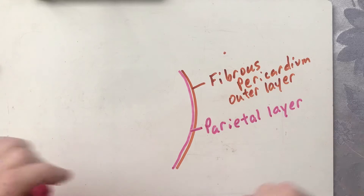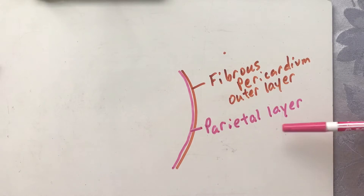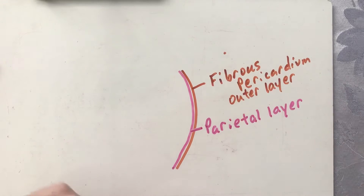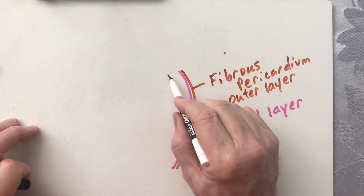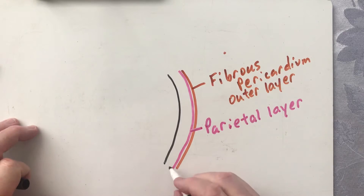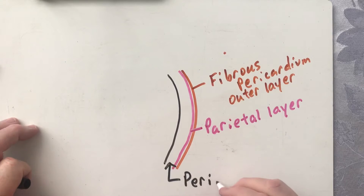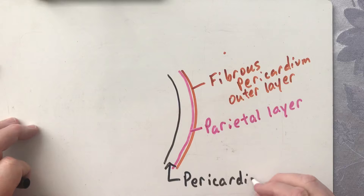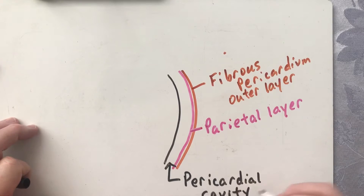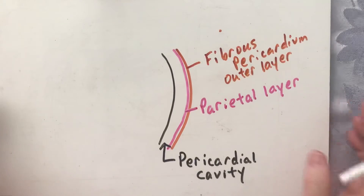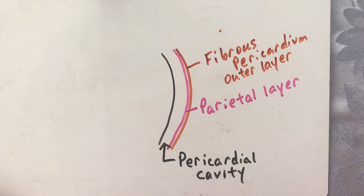The parietal layer secretes a serum, and that serum is responsible for reducing friction. Next, there is a cavity here called the pericardial cavity. This small cavity goes around the whole heart.